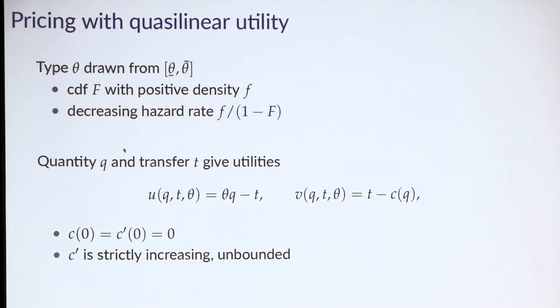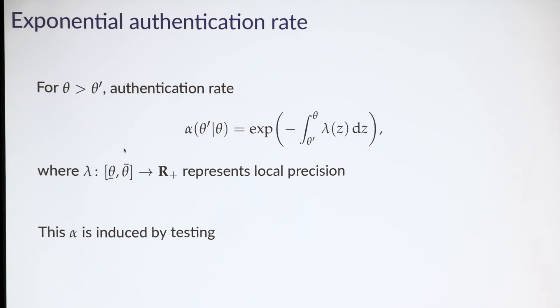Now I want to turn to a quick application to illustrate what probabilistic verification can do. Consider a standard pricing setting with quasi-linear utility. The agent draws a type with decreasing hazard rate. The agent's utility from quantity and transfer is quasi-linear. Quantities are real numbers, so the agent has constant marginal utility from consumption given by theta. The principal gets the transfer and has some cost function c of production with c prime strictly increasing and unbounded.